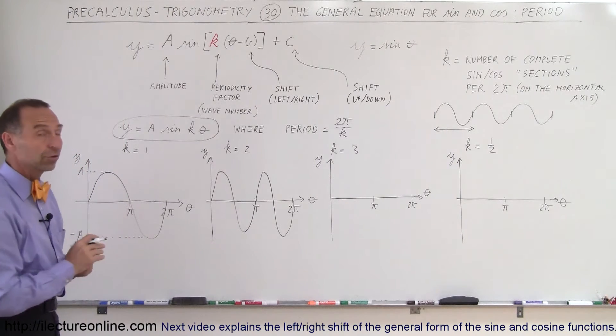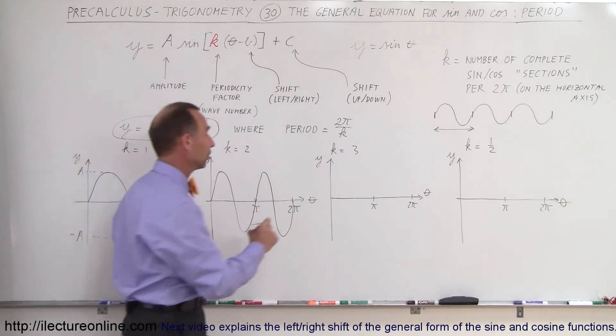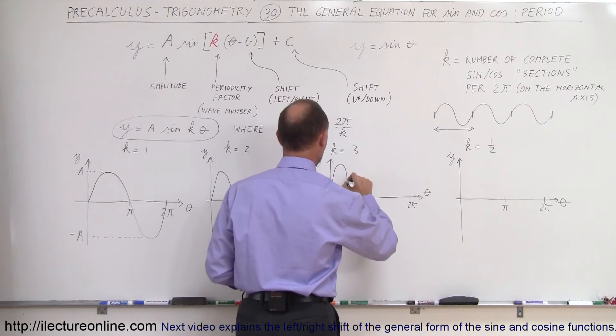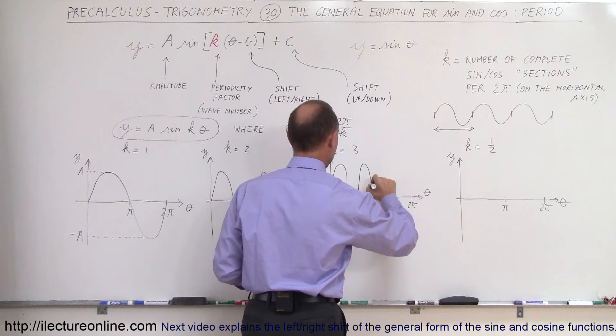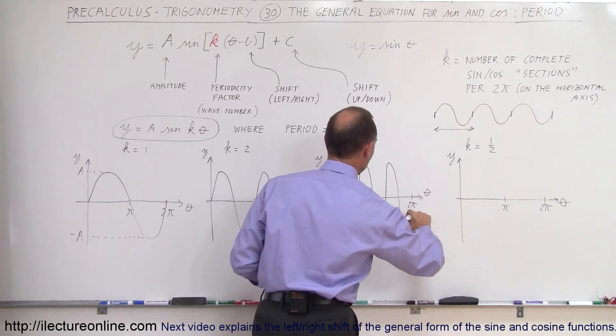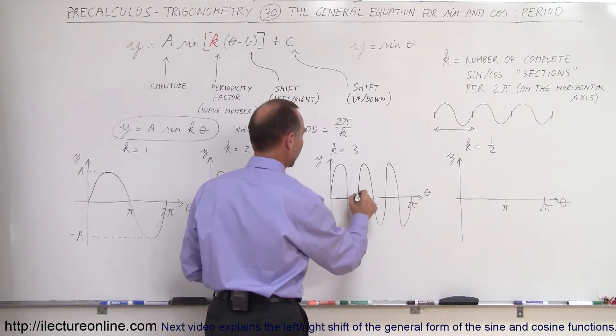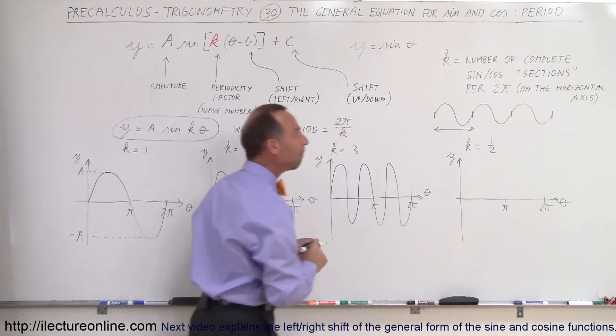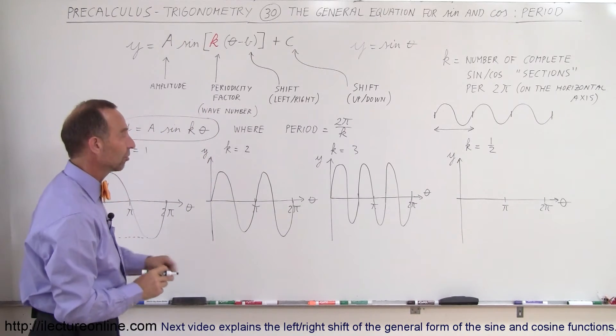If k is equal to 3, then you have three little sections, so that happens this way. You have a first one down, back up, back down, and then back up, back down, and back up like that. So now you can see that you have one section, two sections, three complete sections in a 2π distance on the horizontal axis.